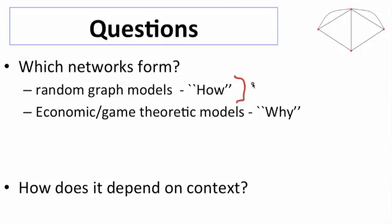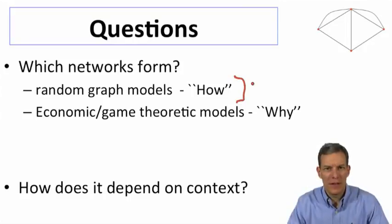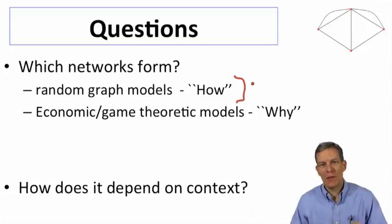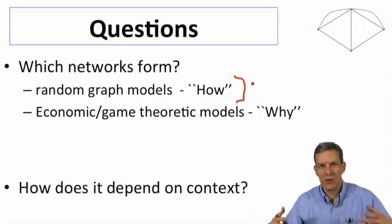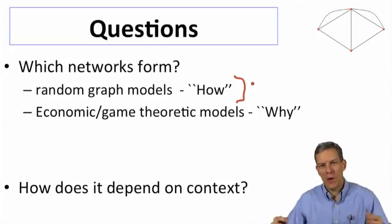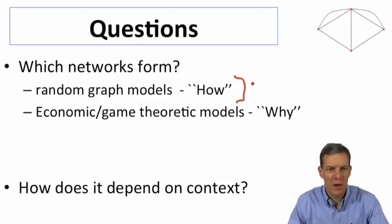So we've got the random graph models are going to tell us a little bit about how. And the idea here is that they give us a process. And if we want to understand why random networks have short average path length, then we understand that there's a tree structure underneath them. And that tree structure helps explain how it's easy to reach from any other node to any other node in a relatively short number of hops.